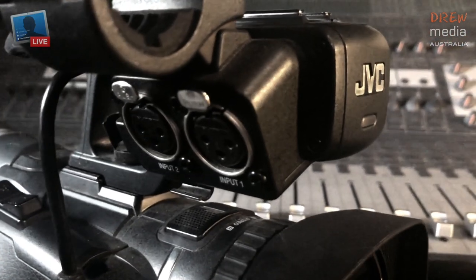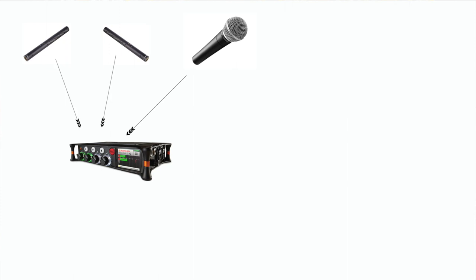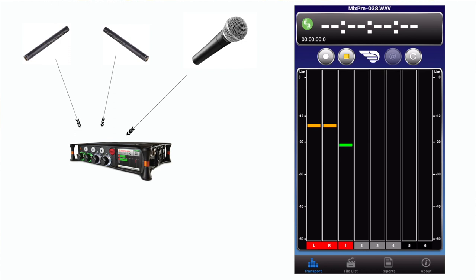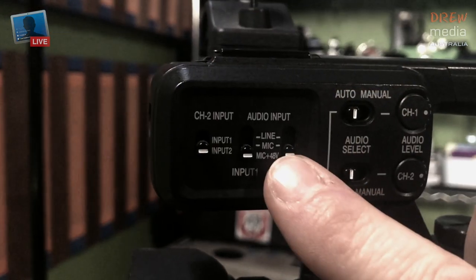Assuming we only have one camera with two audio XLR inputs, but now we have three mics — how do we manage this? The solution is to introduce a mixing console or a little audio recorder or sound interface which can accept three mics. You put all your mics into the mixing console or audio recorder, mix them in and get a nice audio level using your gains and master faders. From the mixing console or recorder, take the output and feed that into the two XLR inputs of your camera, set to line input — not mic.